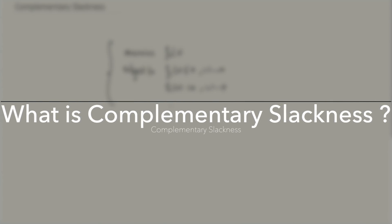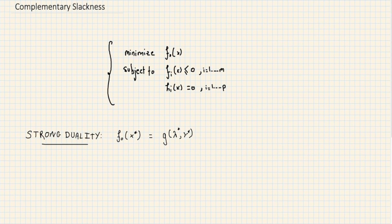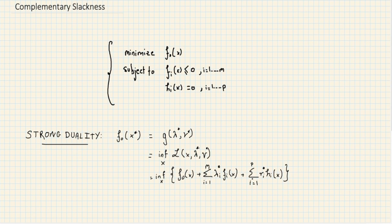Let's say we've got an optimization problem and we have strong duality. That means f0(x*) equals the dual function evaluated at the optimal Lagrangian pairs — the dual optimal point. Using the definition of the dual function as the infimum over x of the Lagrangian evaluated at the optimal Lagrangian points, and substituting the Lagrangian, we get f0(x) plus the weighted sum on the inequality and equality constraints.